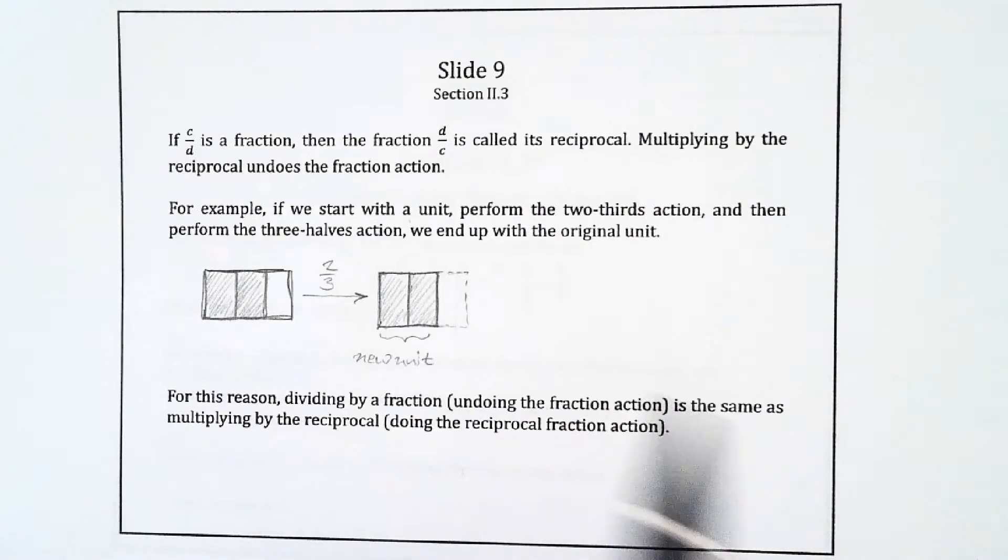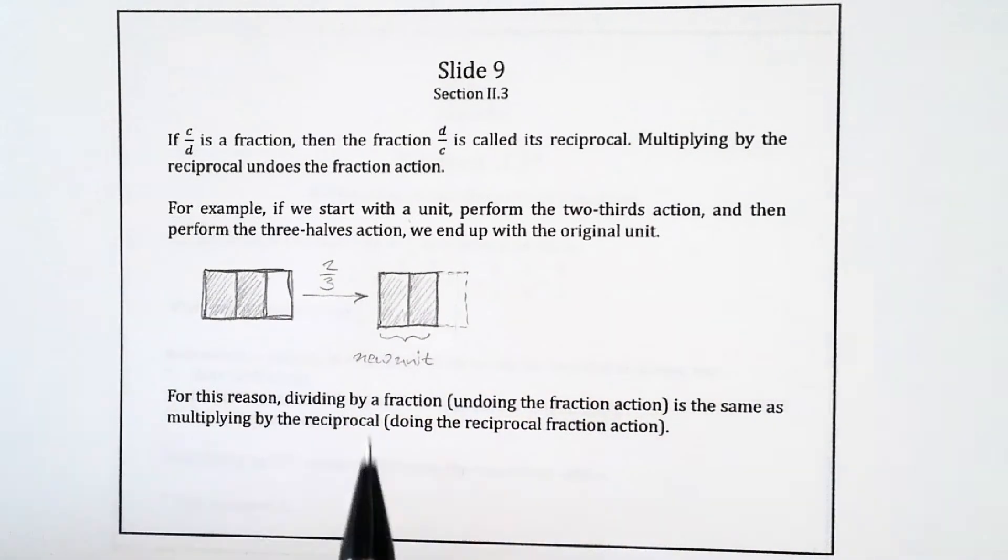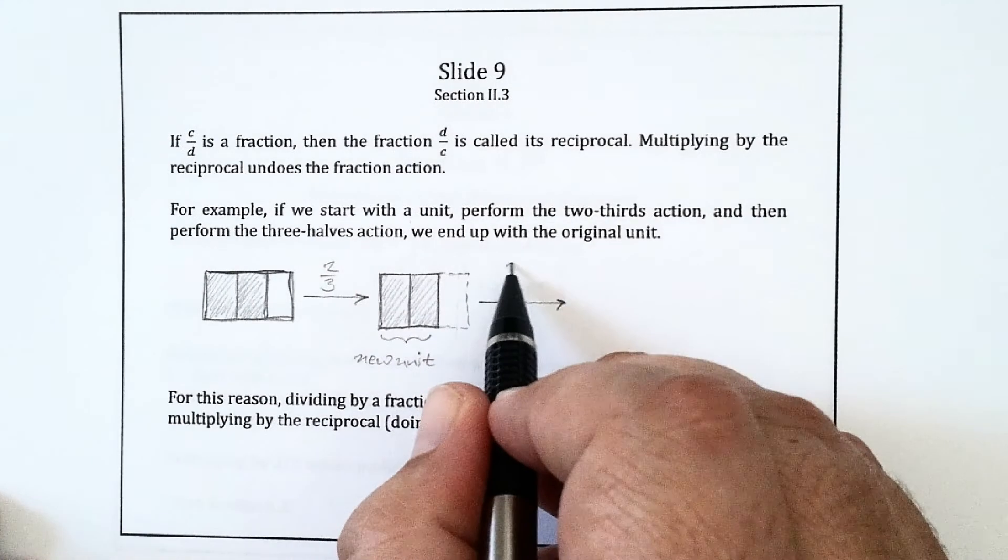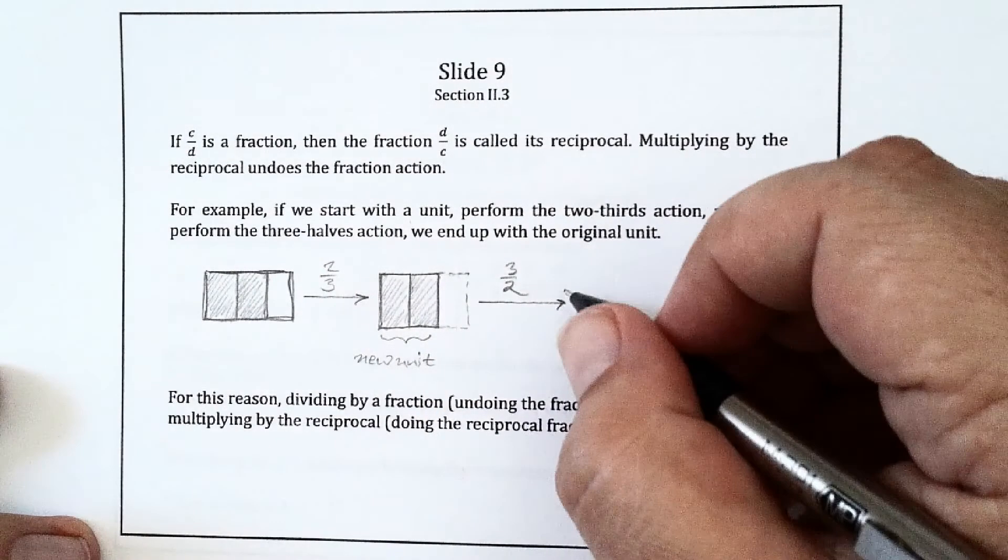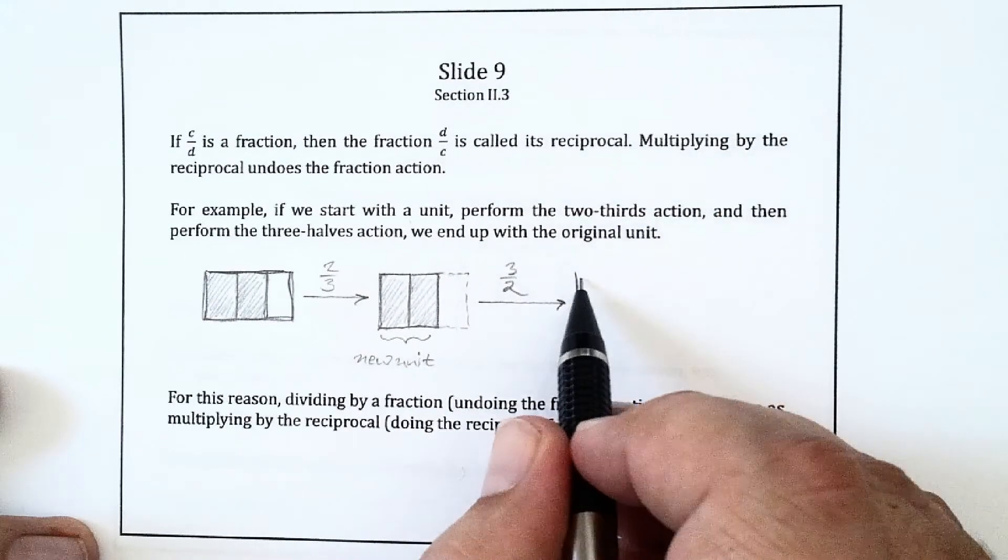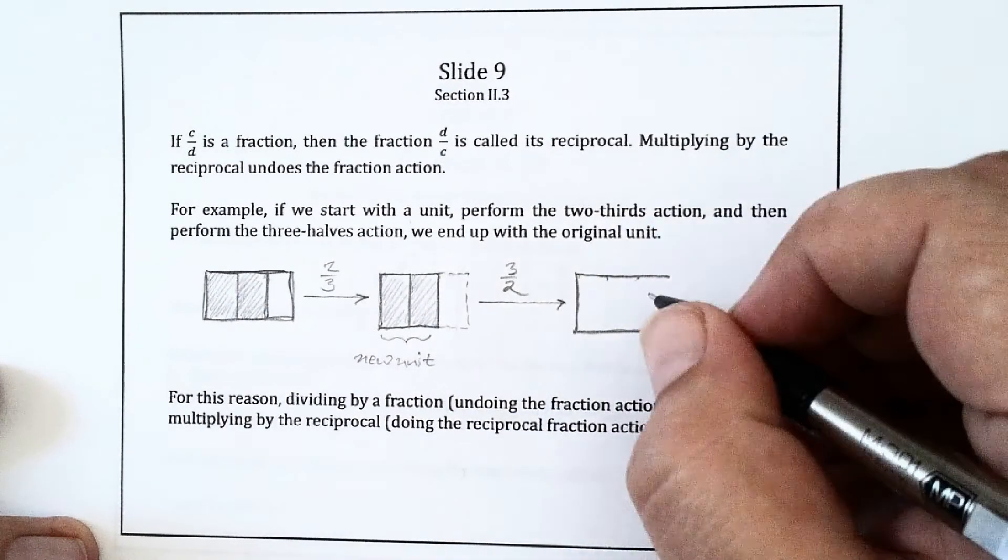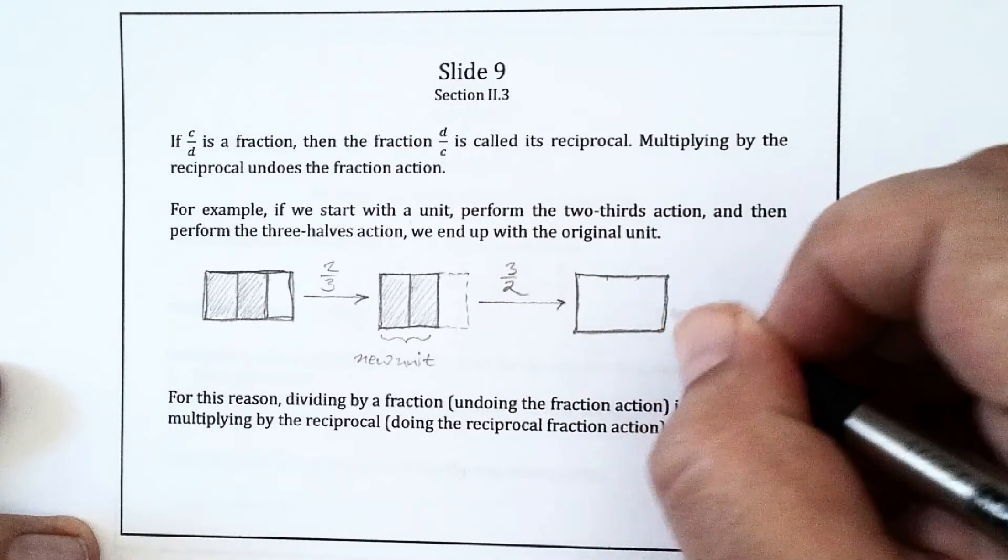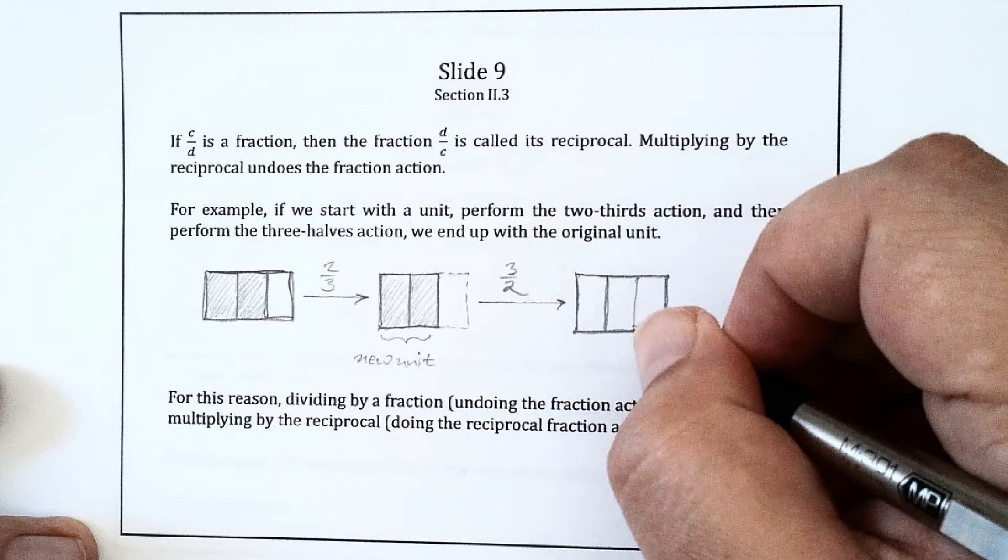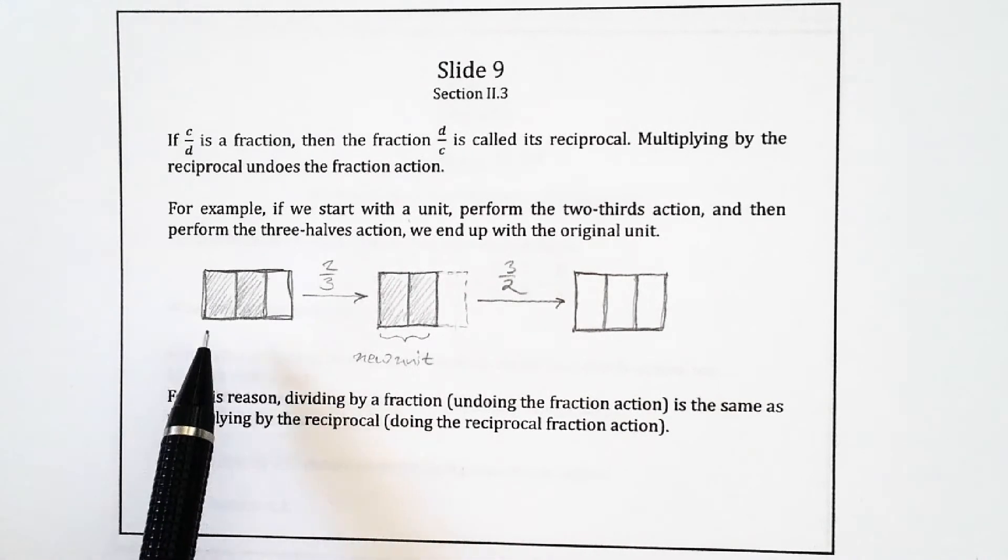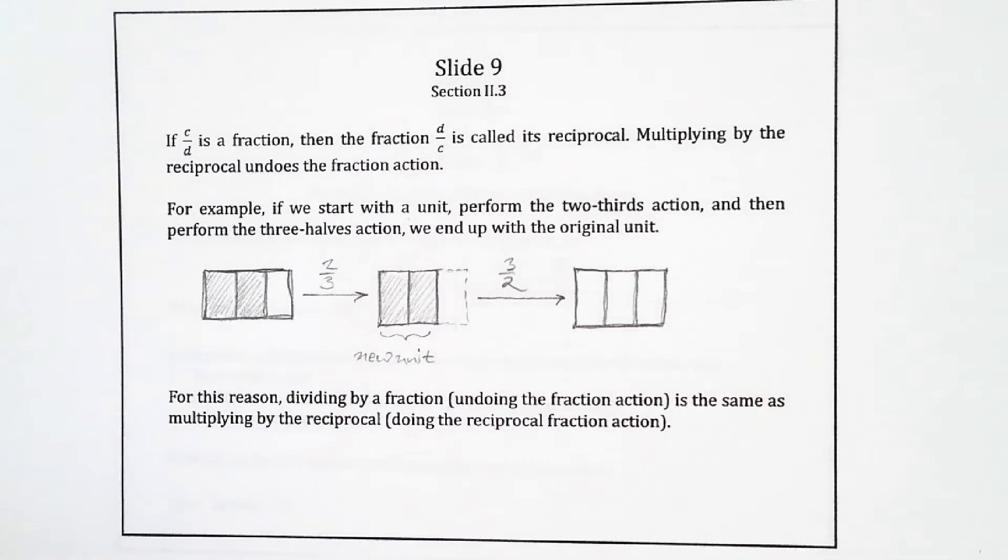But now we're going to do the three-halves action to this unit. What does the three-halves action do? Well, it says take your unit, or however many of those units that you need, you divide those units into two equal parts, and then you want three of those parts. So if I take this new unit, this part of a loaf of bread which is our new unit, I divide it into two equal parts, mentally perhaps, and then I imagine how much bread would I have if I had three parts like this? Well, that's what we get when we perform the three-halves action, and I end up with the original loaf.